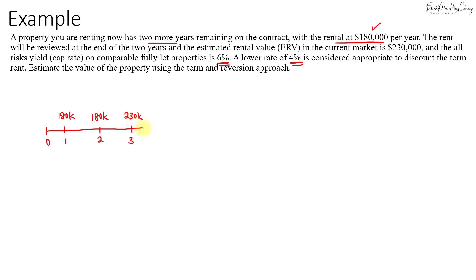That's the current market rent. Then this goes on. This amount here will be flat, $230,000 perpetually.